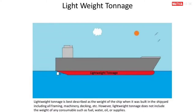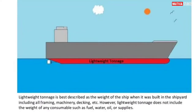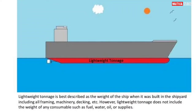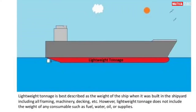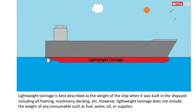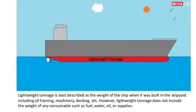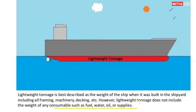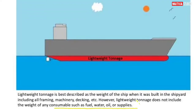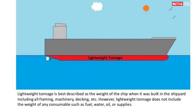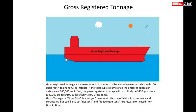Lightweight tonnage is best described as the weight of the ship when it was built in the shipyard, including all framing, machinery, decking, etc. However, lightweight tonnage does not include the weight of any consumables such as fuel, water, oil, or supplies.